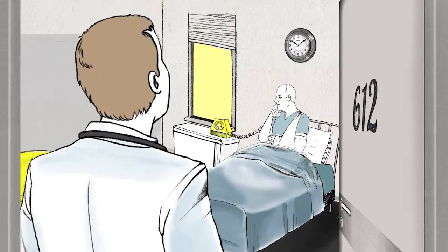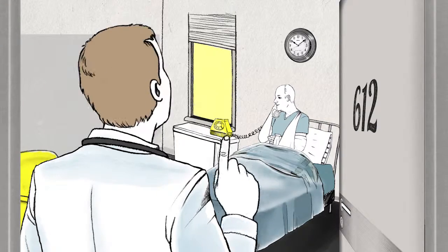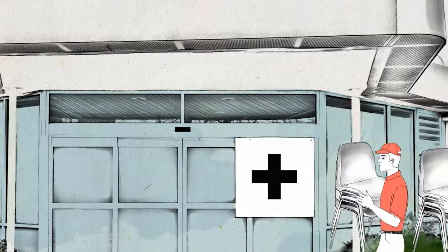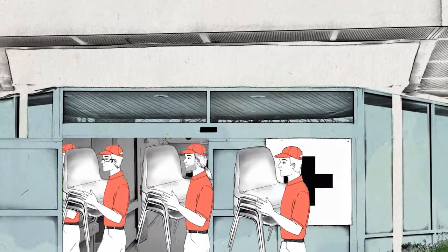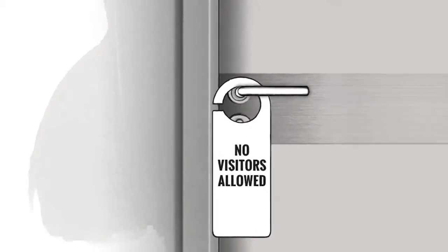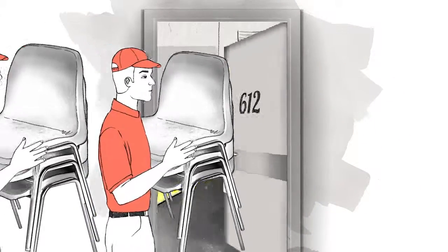He told his doctors his plan. They told him absolutely not. But Norman called Ducky Bob's party supply and had a dozen chairs delivered to the room. 'I'm in room 612. Don't let anybody stop you.'